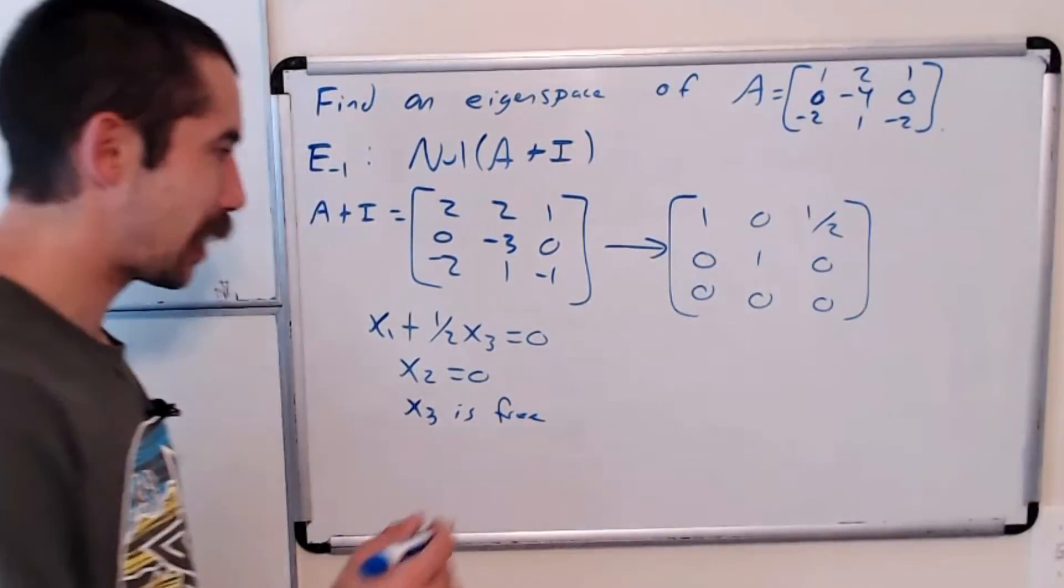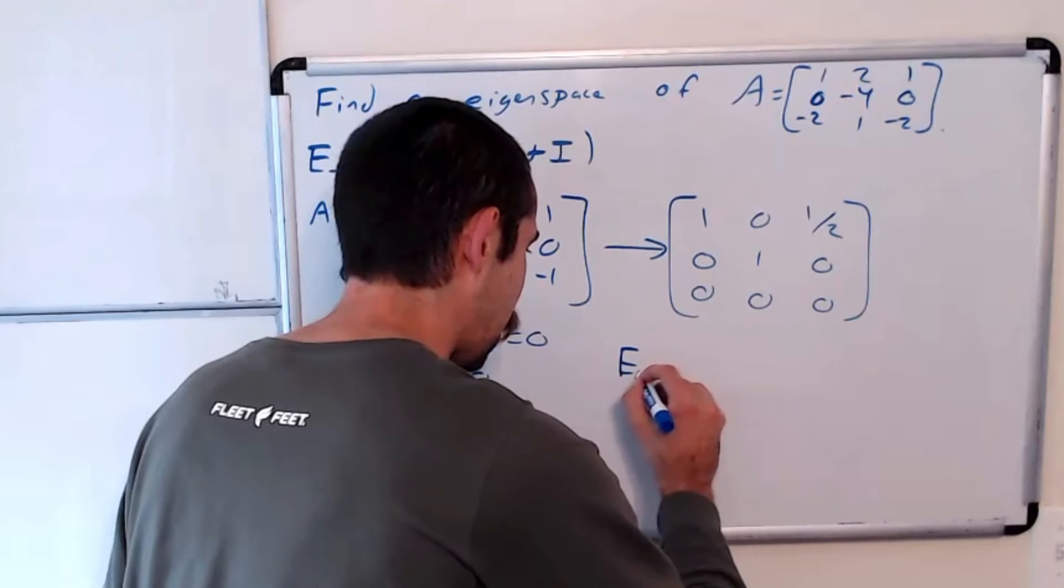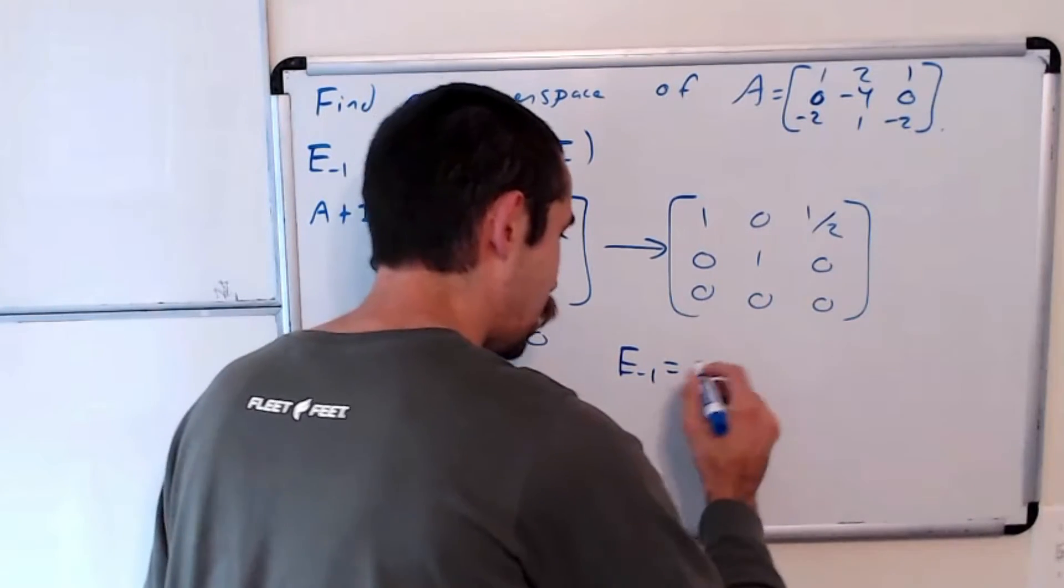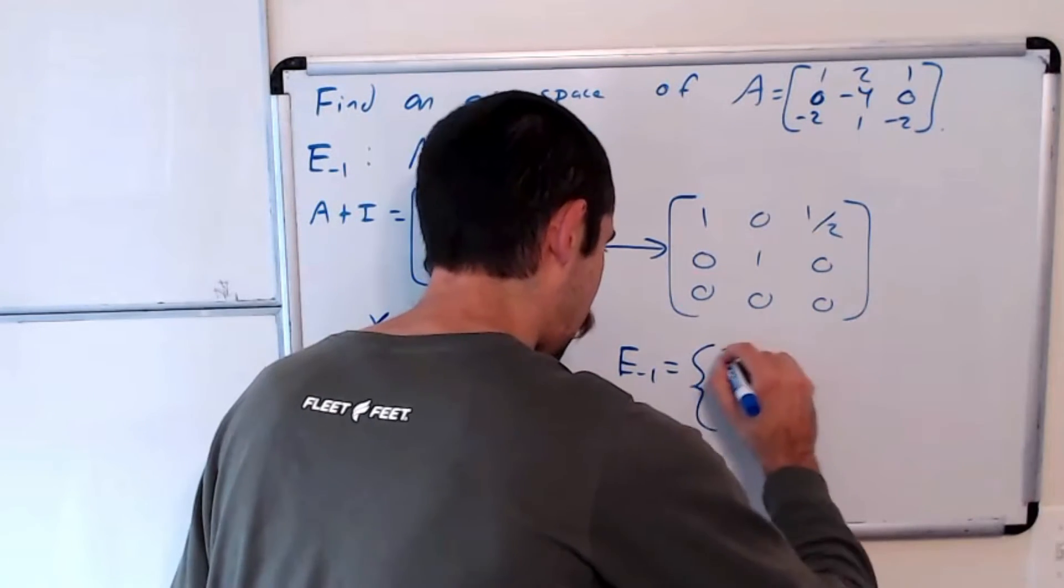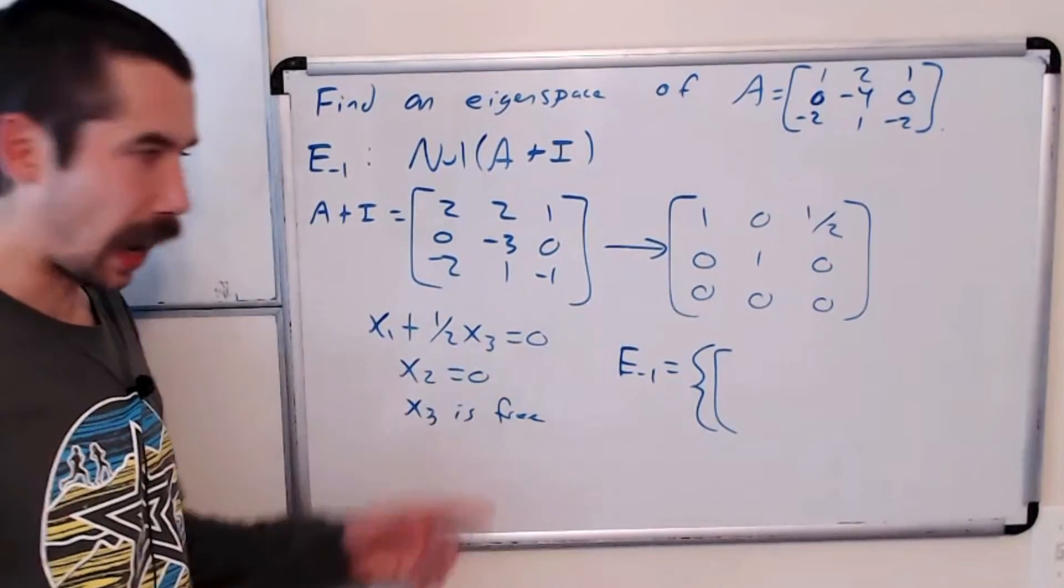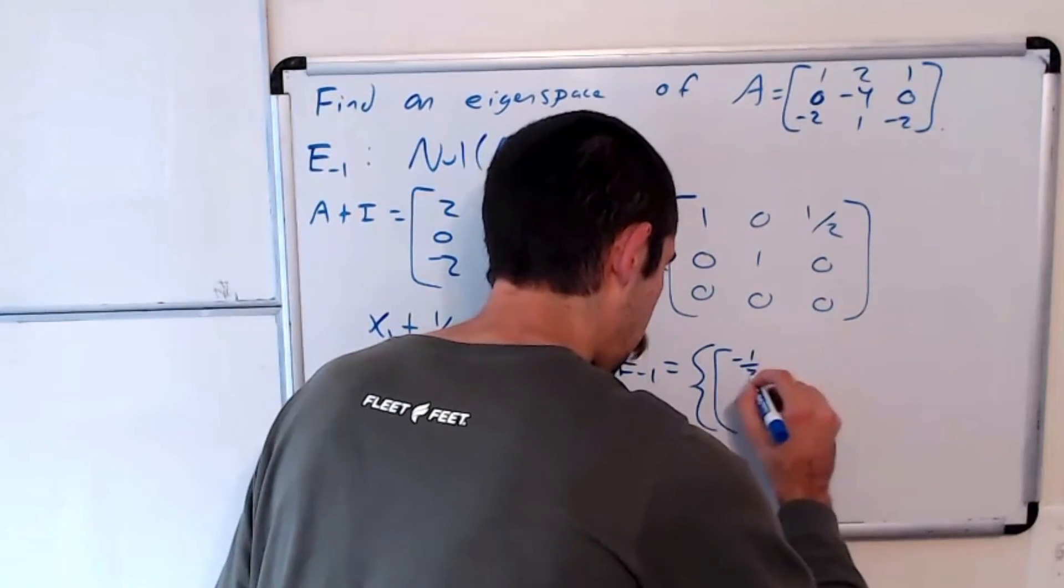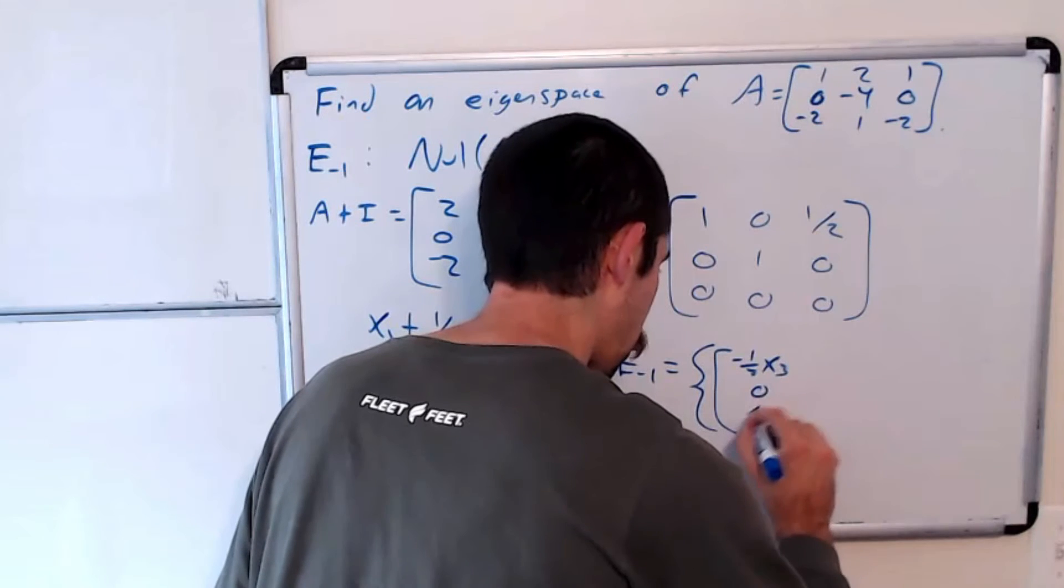So the eigenspace corresponding to eigenvalue negative 1 is equal to the set of all vectors of the form negative 1 half x3, 0 and x3.